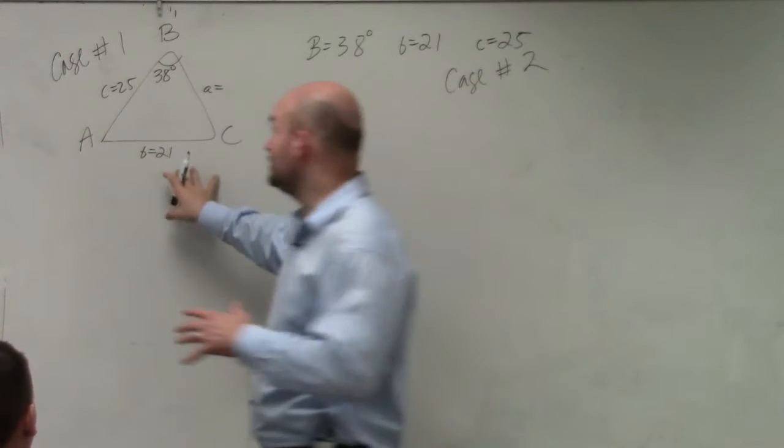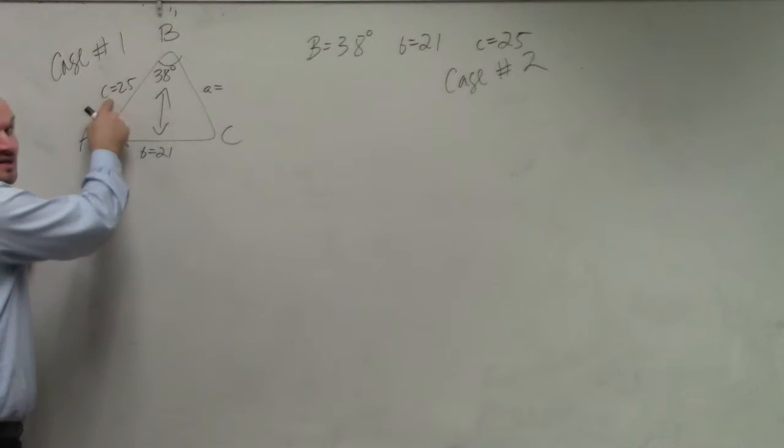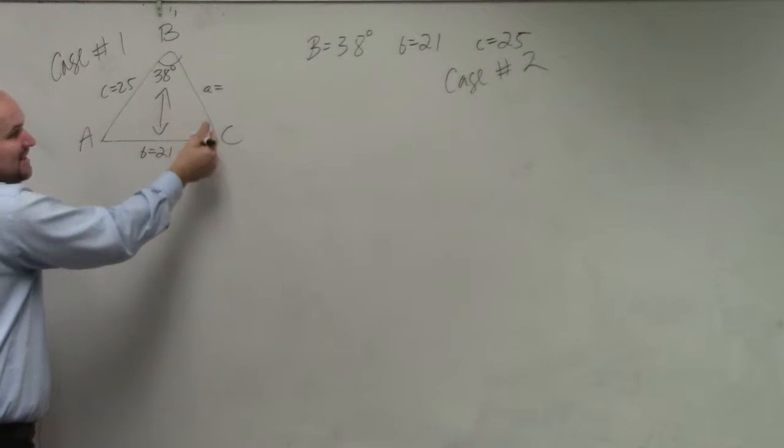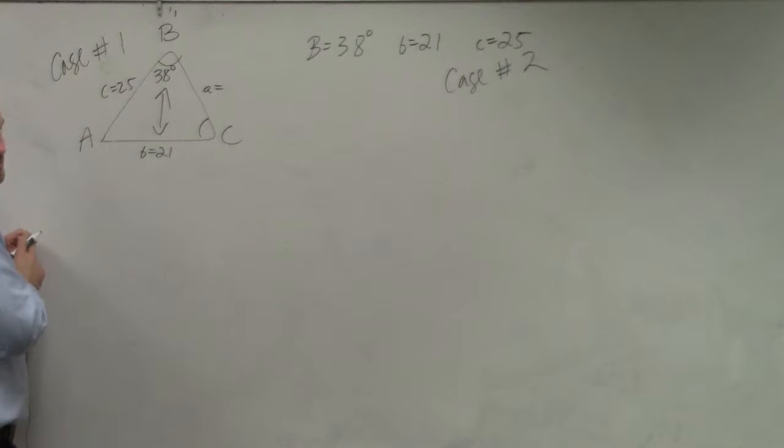So the first thing I look at is using the law of sines, what should I solve for? I have a ratio of b over sine of b. So therefore, the only other information I have is side of c. So it makes sense then for me to solve for angle c. Does that make sense?